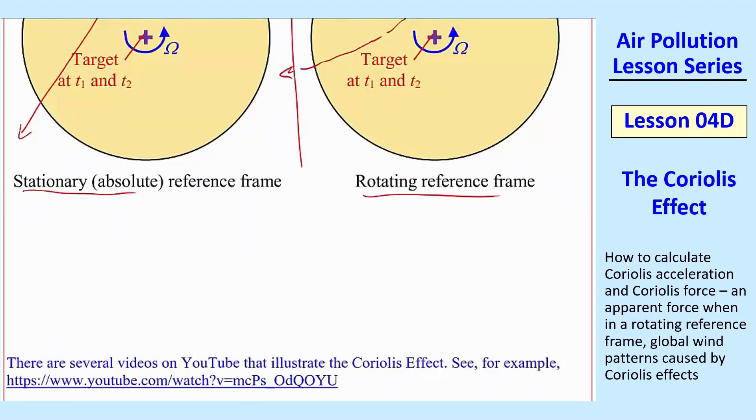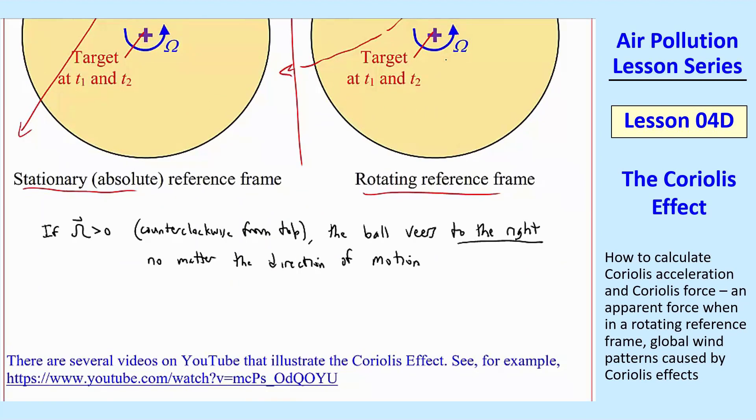So we summarize this. If omega is greater than zero, counterclockwise from the top like we're talking about, the ball veers to the right no matter what the direction of motion is. And the opposite occurs if omega is the opposite way. So I write the same statement except now it's clockwise. Omega is less than zero. It's clockwise from the top.